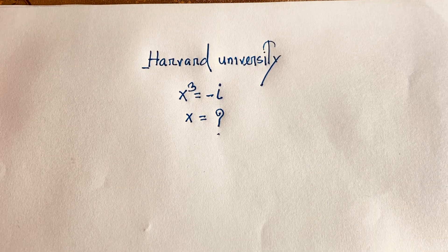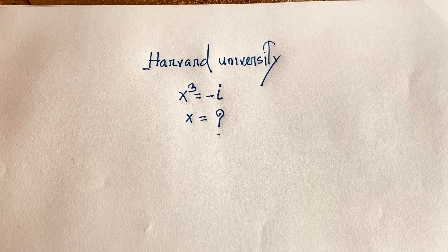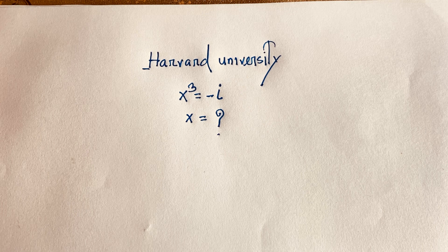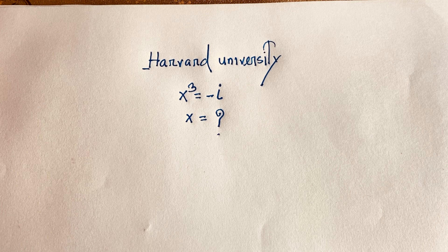Hello everyone. In this video we have solved this interesting complex number question. The question is: x to the power 3 is equal to minus i. What is x? How to solve this exponential equation?